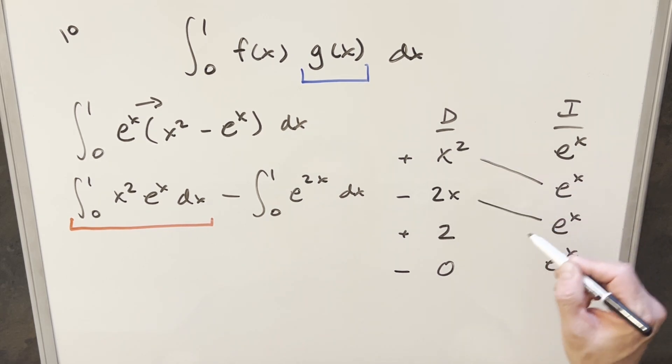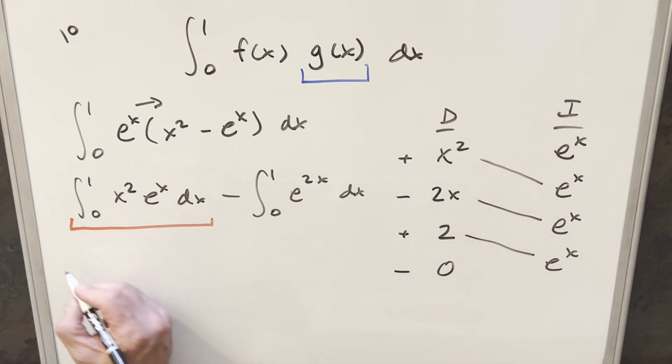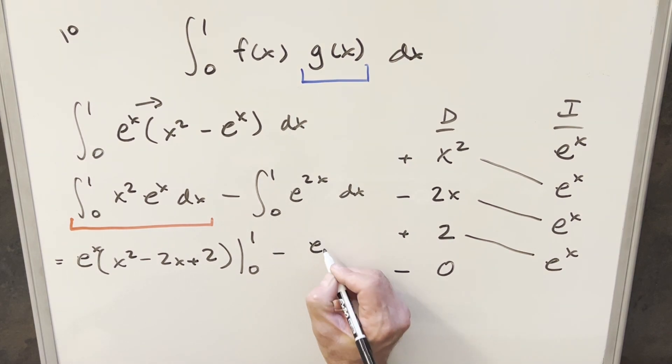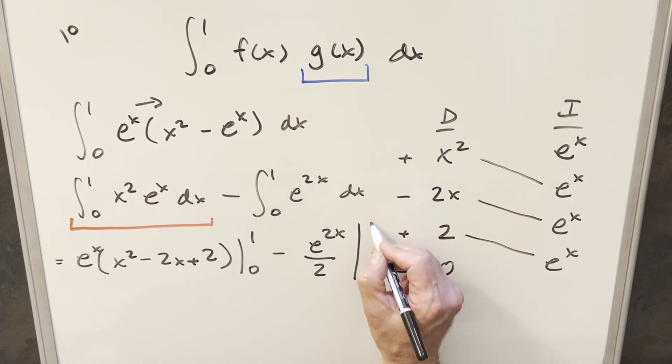So we'll have part of our solution on the diagonal. What I can do with all these is let's factor out e to the x, and then just capture everything in this column, x squared minus 2x plus 2, evaluated from 0 to 1. Integrating here, we're going to have minus e to the 2x, but we're going to have a 2 come out in the denominator like this. And also evaluating 0 to 1.